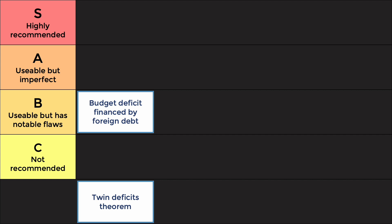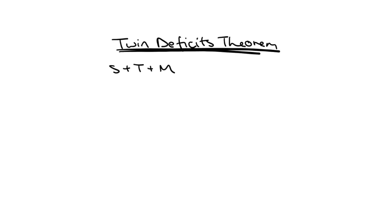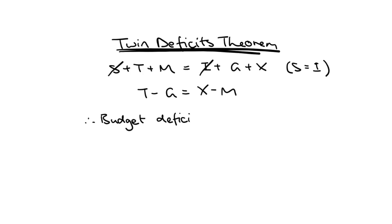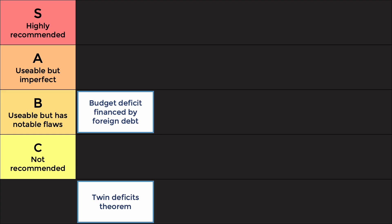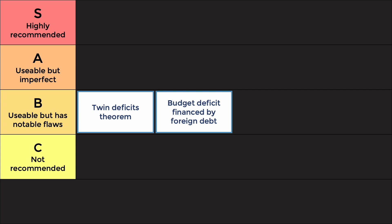Next is the Twin Deficits Theorem — an extension concept that theorises that budget deficits lead to greater current account deficits. This theory is explained using a bit of maths. We start by assuming the economy is in equilibrium, that total injections equal total leakages. We then assume that savings and investments are also in equilibrium, so they cancel each other out in the equation. After rearranging, you find that the budget deficit correlates with a current account deficit. The problem is it relies on unrealistic assumptions and there's a lack of real-life evidence. However, if you can explain this extension concept well, it makes you stand out. For this reason it lands in B-tier, ranking just a little better than the previous argument.